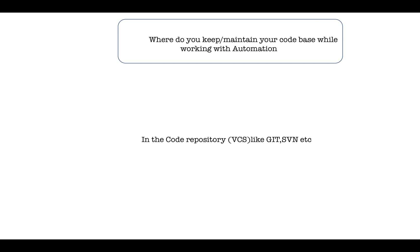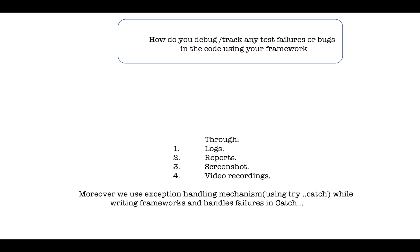Where do you maintain your codebase? Mention that you use a code repository and version control system like Git or SVN for maintaining the codebase. For debugging and tracking test failures, mention that the framework has features such as logs, reports, screenshots, and video recordings. You also use exception handling mechanisms like try-catch to catch exceptions and debug from there.